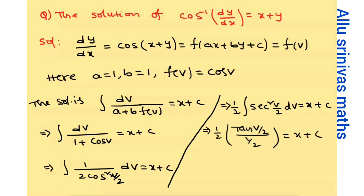Here v equals x plus y. Substituting back, the final answer for the given problem is: tan((x plus y) over 2) equals x plus c. This shortcut for the variable separable form is easy to use and solves the problem efficiently. Thank you.